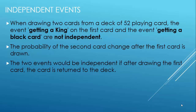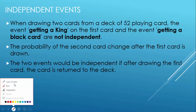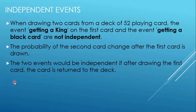When drawing two cards from a deck of 52 playing cards, the event of getting a king on the first card and the event of getting a black card are not independent. Because if you draw a king of black, then the probability of getting a black card on the second draw will change. So in this case the events are not independent.